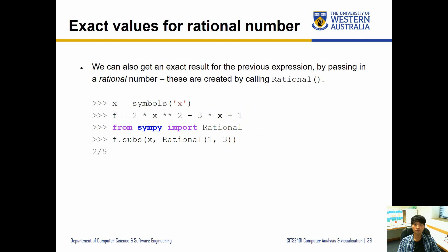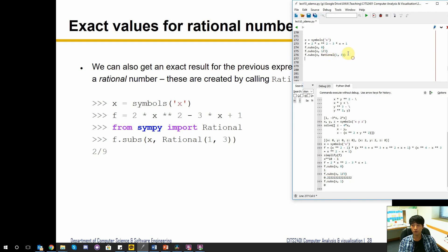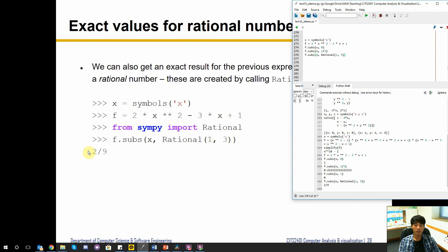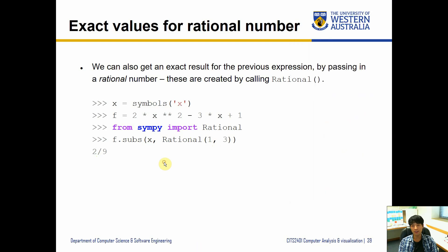We can also get an exact result for an expression by passing in a Rational number. These are created by calling the Rational function — already imported. For example, Rational(1, 3) represents one-third, and substituting it returns 2/9 as an exact fraction — which is what 0.222... is as a fraction. If a number can be better represented as a fraction, use Rational and the output will also try to fit into a rational form.